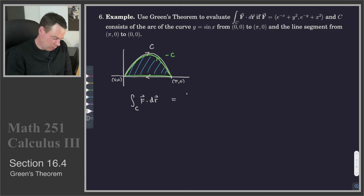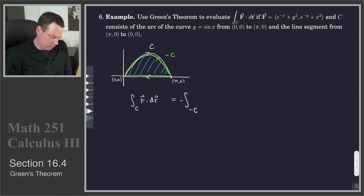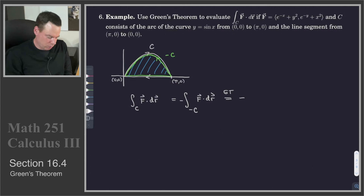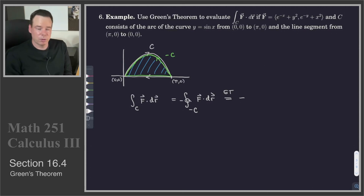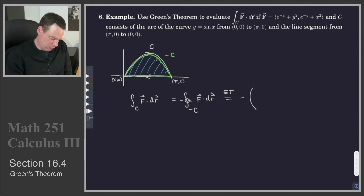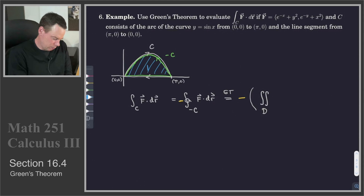To use Green's Theorem, we need a positively oriented curve. So what we will do is integrate along the curve negative C — the curve in the opposite direction — and take the negative of that to recover the integral along curve C. That's just one slight adjustment. Now by Green's Theorem, the integral along the curve negative C (which is positively oriented) is equivalent to the double integral over region D of dQ/dx minus dP/dy dA.